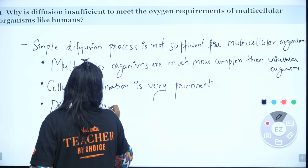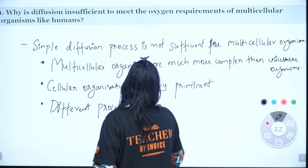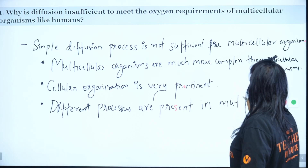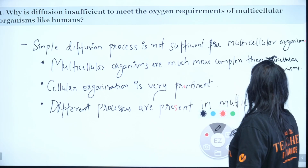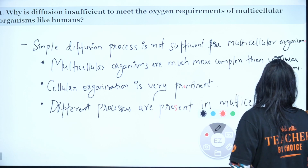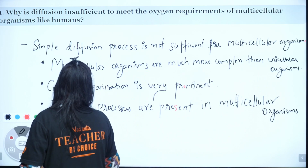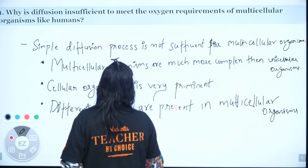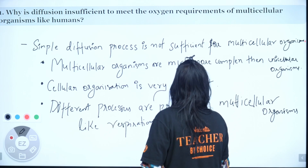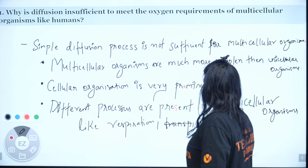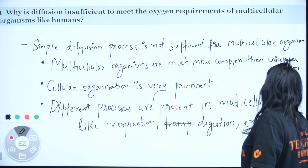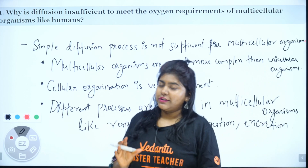Different processes are present in multicellular organisms. For example, respiration, transpiration in plants — that comes under plants. In humans, we have digestion and respiration and excretion.